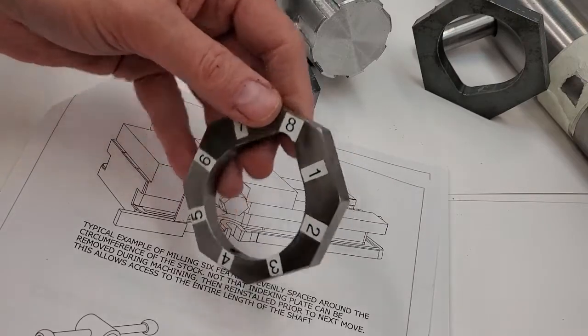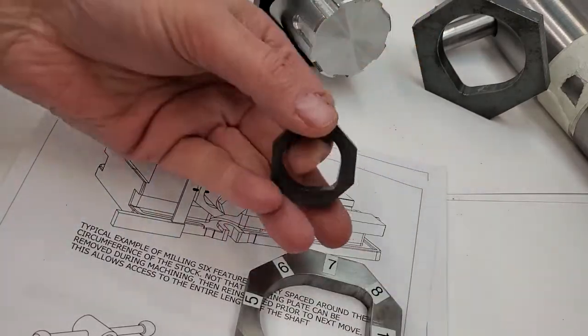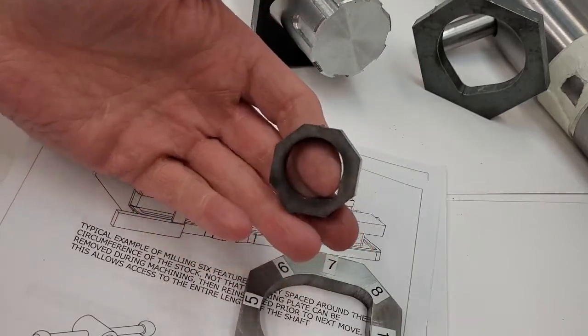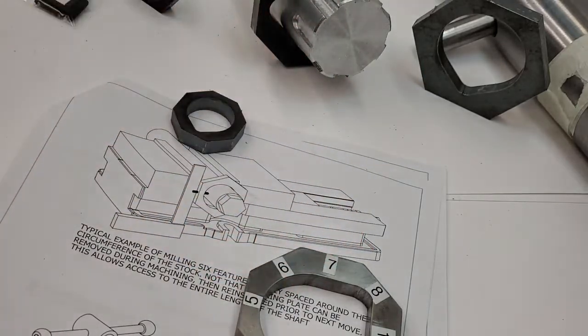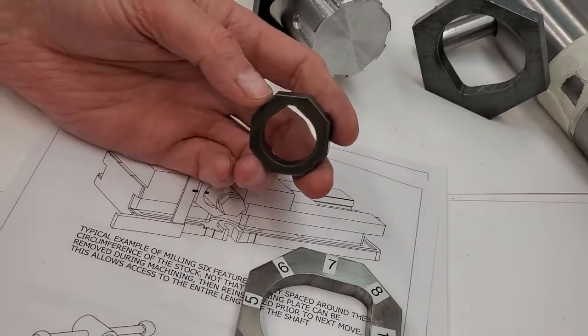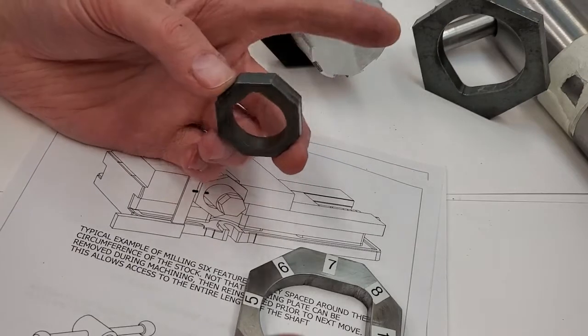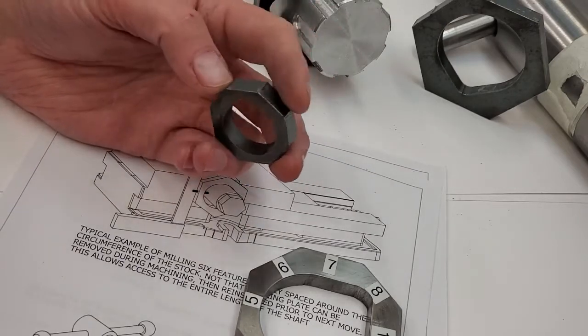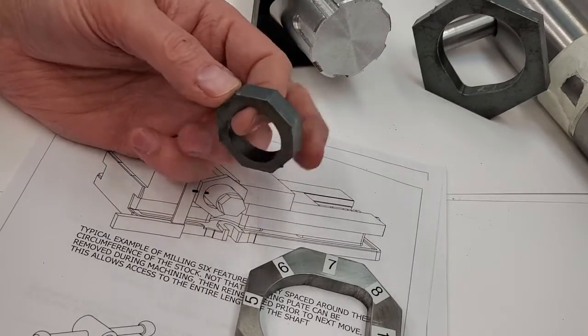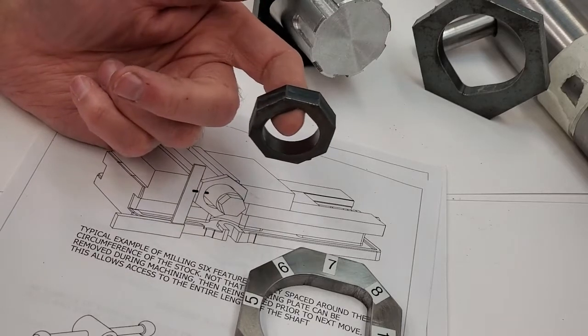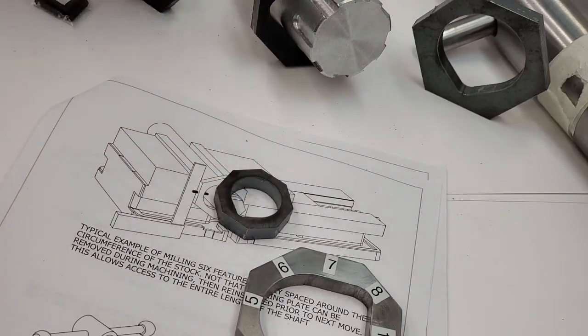The larger plates have a two-inch capacity and the smaller ones a one-inch capacity. These allow you to index or clock the shaft at 60 or 45 degree increments.